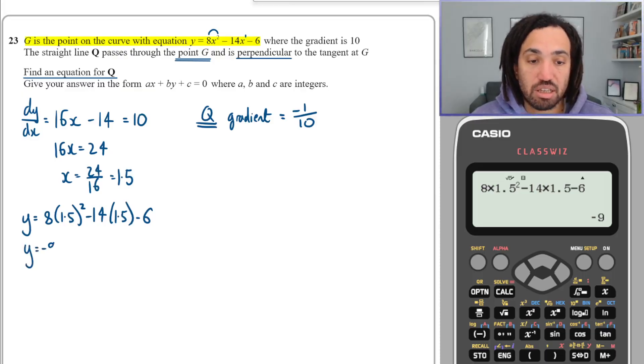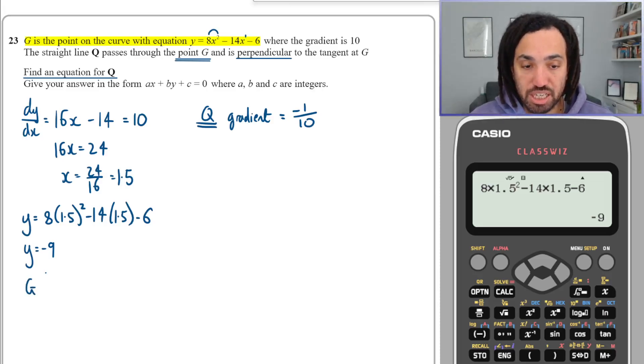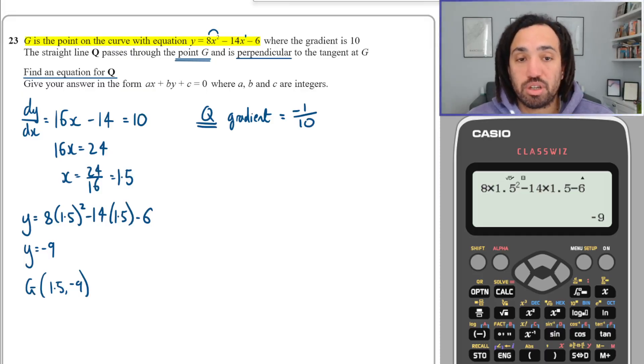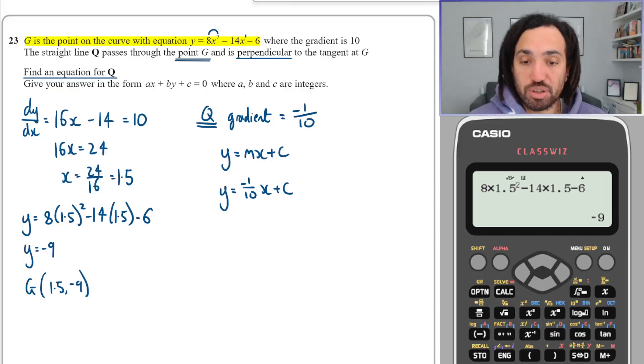And we get y = -9. Lovely. So we now know that the point G is 1.5, -9, and we also know that for Q we need to use y = mx + c. So we have y = -1/10 x + c. Let's sub in a point we know is definitely on the line, where y is -9 and x is 1.5.